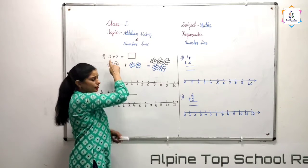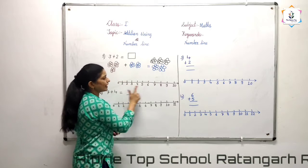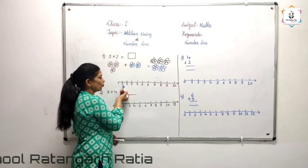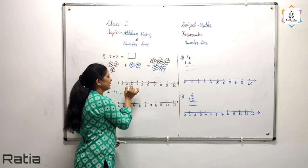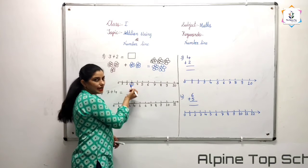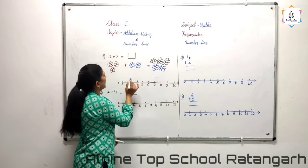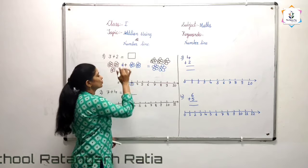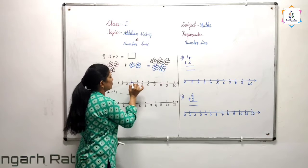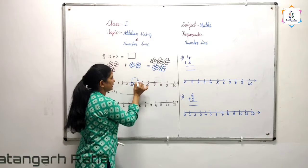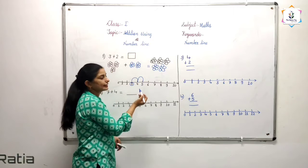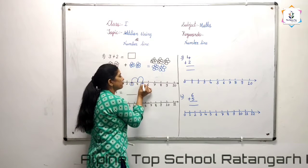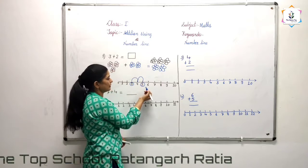First, what is the first number? The first number is 3. Find where 3 is — see: 0, 1, 2, and this is the number 3. So now we have to move 2 steps. 1 step and 2 steps. Where do we reach? We reached on the number 5.